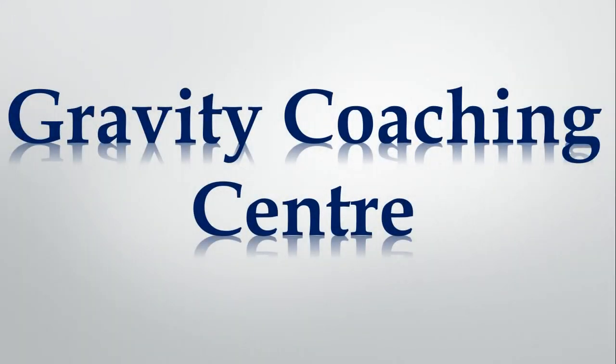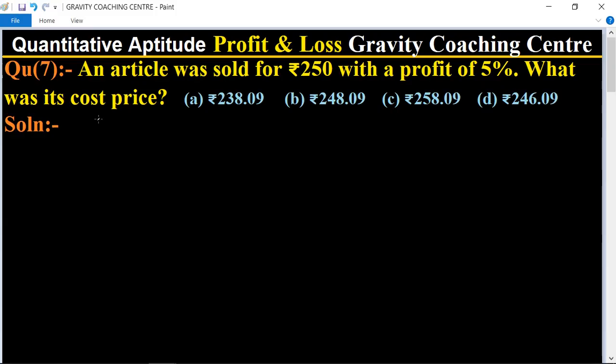Welcome to our channel, Gravity Coaching Center, Quantitative Aptitude, Chapter Profit and Loss. Question number 7: An article was sold for rupees 250 with a profit of 5%. What was its cost price?